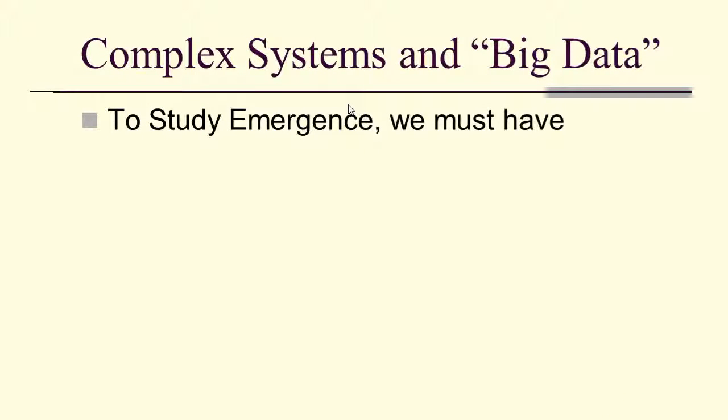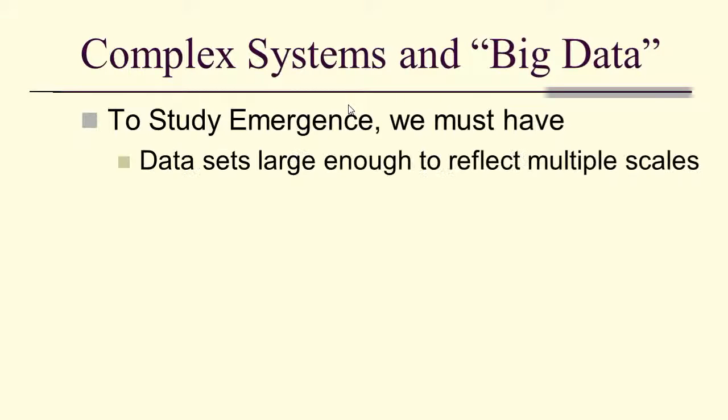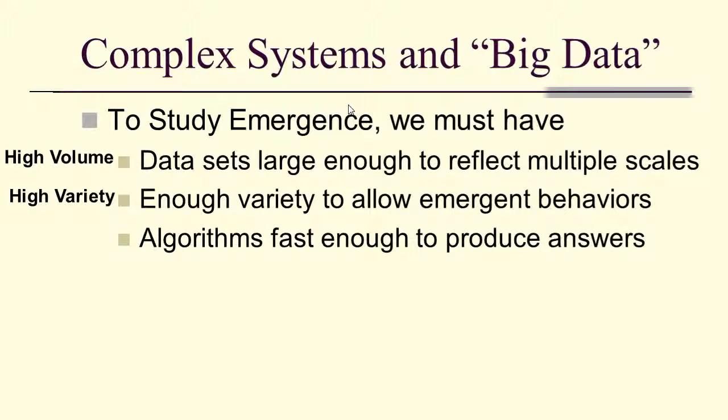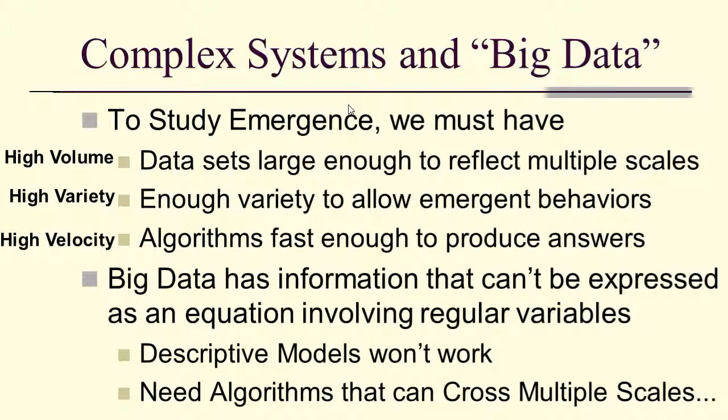So complex systems and big data. To study emergence, we have to have datasets large enough to reflect multiple scales, high volume, enough variety to allow emergent behaviors, high variety, algorithms fast enough to produce answers, high velocity, and big data has information that can't be expressed as an equation involving regular variables. That's why we tend to use algorithms.